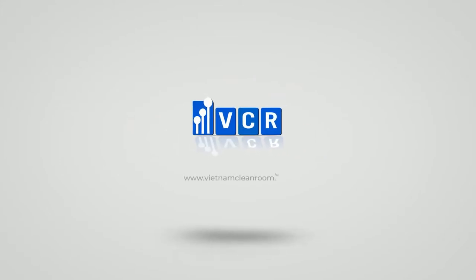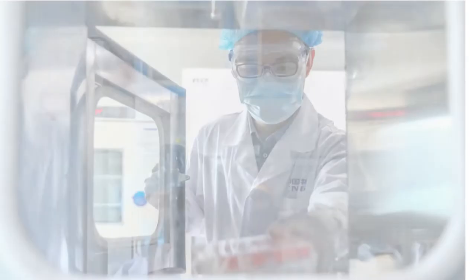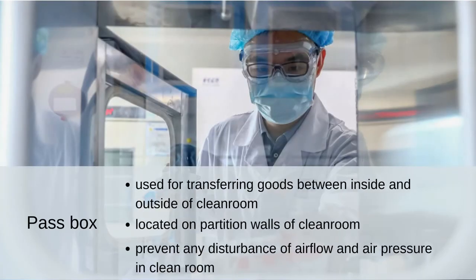Welcome back to Vietnam Clean Room Equipment. A pass box is a facility used for transferring goods between the inside and outside of a clean room. It is normally located on partition walls of the clean room, and it can prevent any disturbance of airflow and air pressure caused by opening doors for goods transfer.